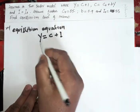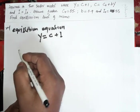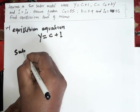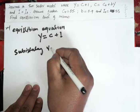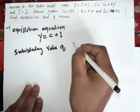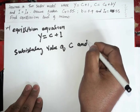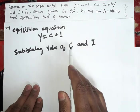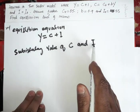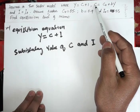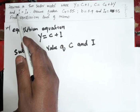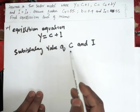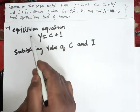Now, substituting the value of C and I. Our C is C0 plus B times Y, and I equals I0. We have to substitute these values in this function.